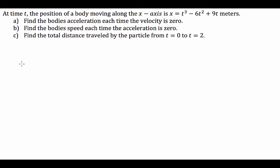We've been given a rectilinear motion question where at time t, the position of a body moving along the x-axis is x = t³ - 6t² + 9t meters. We're asked to find the body's acceleration each time the velocity is 0, find the body's speed each time the acceleration is 0, and find the total distance travelled by the particle from t = 0 to t = 2.